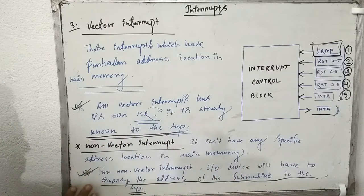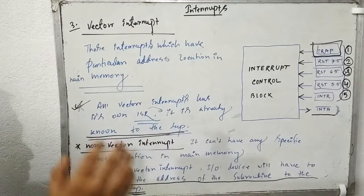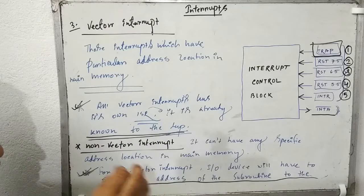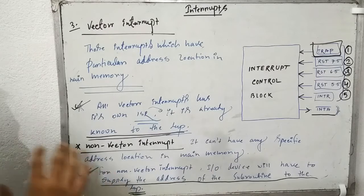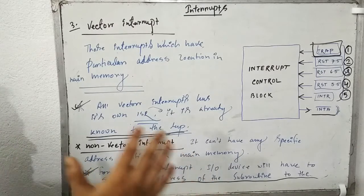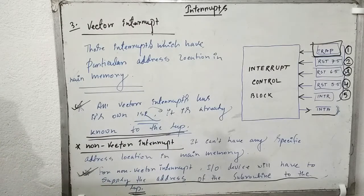In our coming session we will discuss in detail the process of execution of non-vector interrupts — what actually happens — and we will also discuss that portion with the help of a circuit diagram.